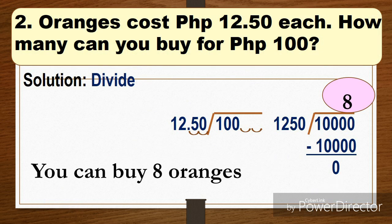Okay, let's have another one. Oranges cost 12.50 pesos each. How many can you buy for 100 pesos? So your money here is 100. One orange is 12.50 pesos. So how many oranges can you buy with 100 pesos?